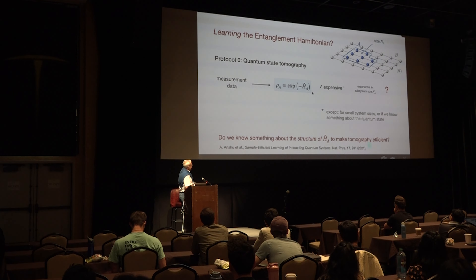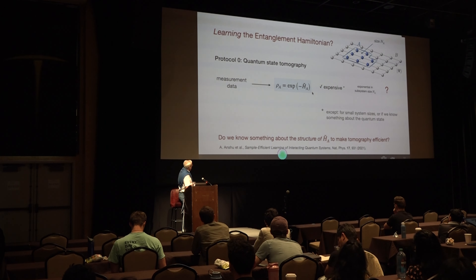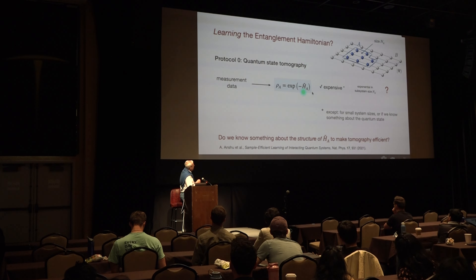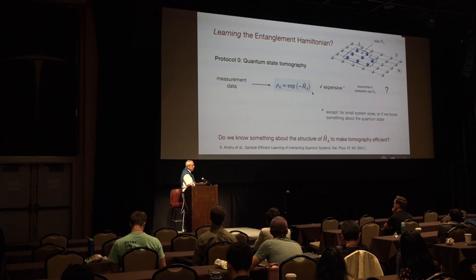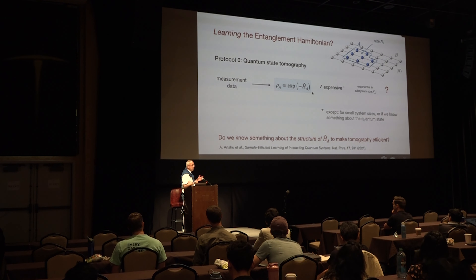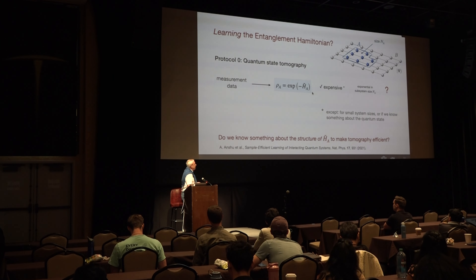Do we know something about the structure to make this tomography efficient? There have been papers — this is parallel to a Nature Physics paper from our group — by Anshu and colleagues, with something called sample-efficient learning of interacting quantum systems. They say if we have a Gibbs state, and the Hamiltonian has only one-body and two-body interactions but not ten-body interactions, then this Hamiltonian learning can be done efficiently — there are mathematical proofs. If it is a Gibbs state of a Hamiltonian with finite operator support, we have efficient algorithms.